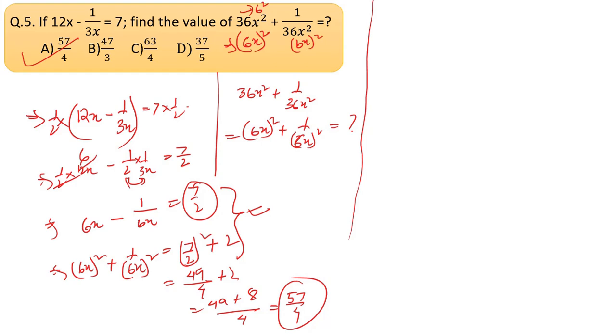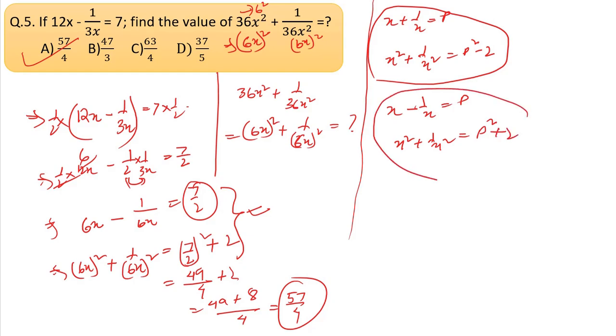The formula is: if x + 1/x = p, then x² + 1/x² = p² - 2. Thank you so much for watching.